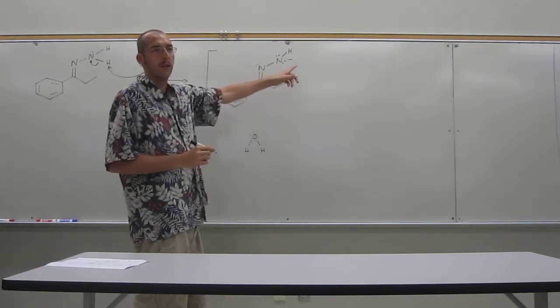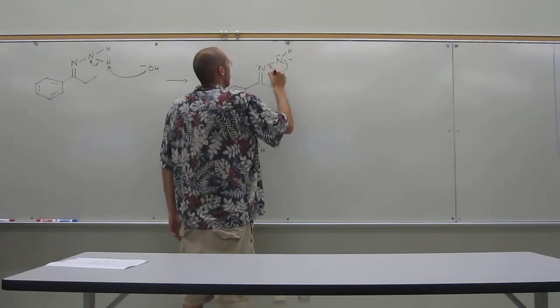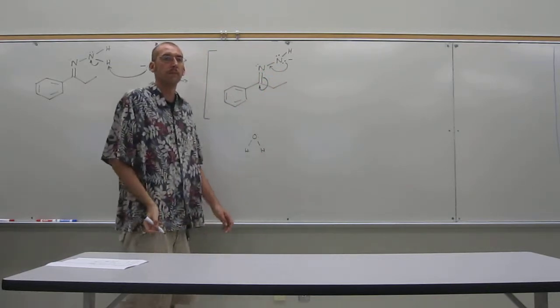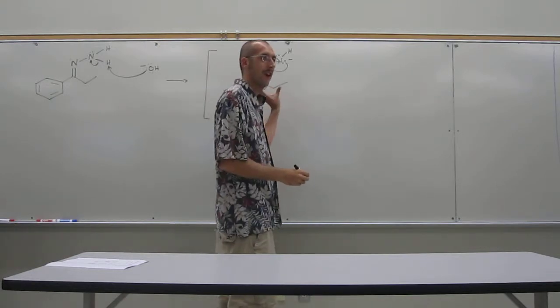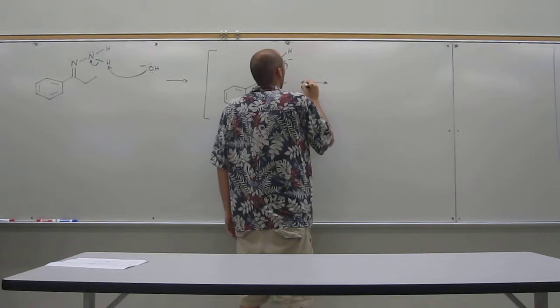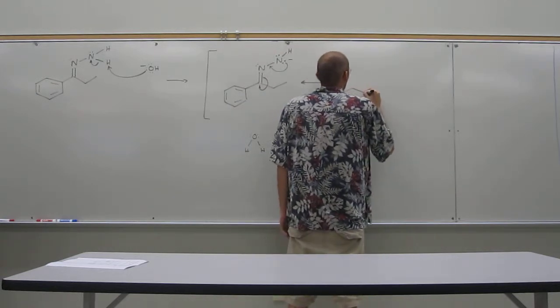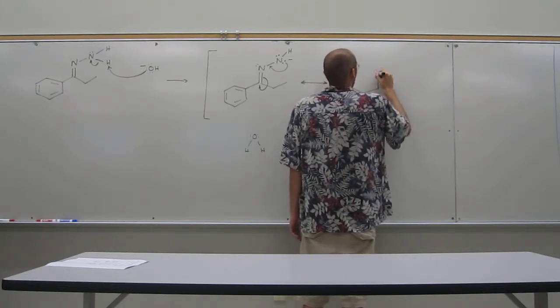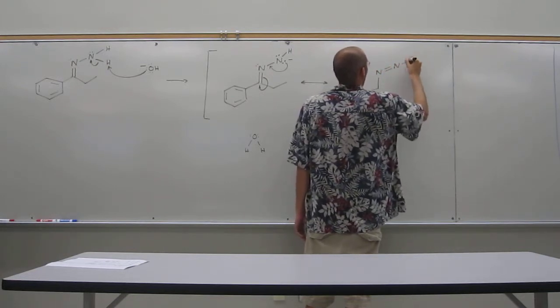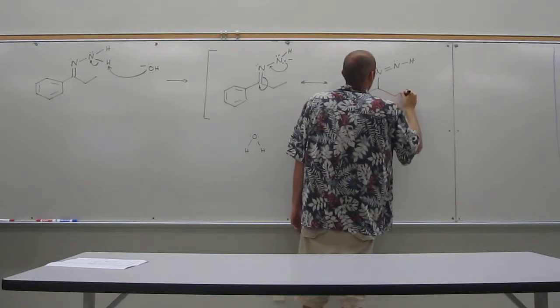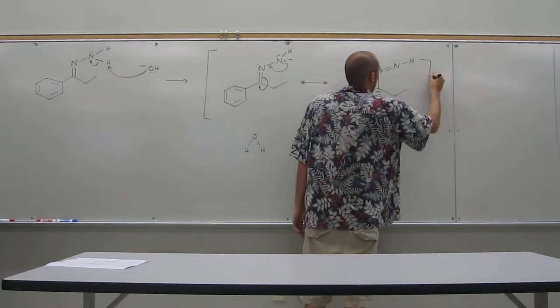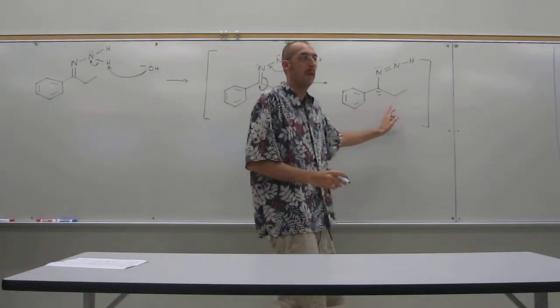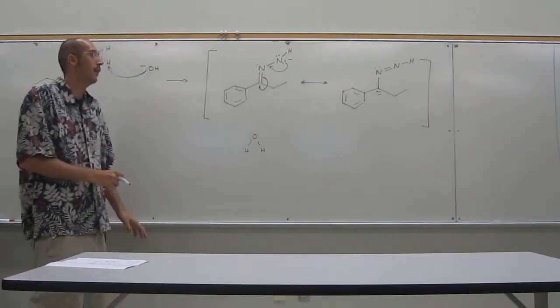But this also has a resonance structure where you can take these electrons, move them here. And when you do that, you make that double bond and these electrons move there. Again, this is a resonance structure. This is not a, these aren't reaction arrows. This is actually not a very major resonance contributor because the negative charge is on carbon here. Not very cool. But it does happen.